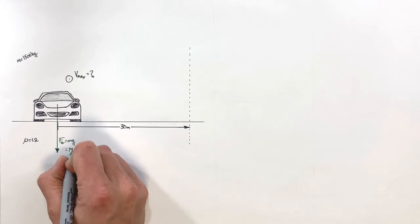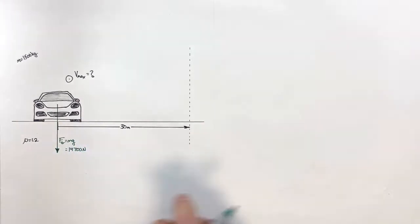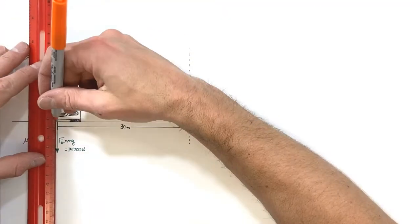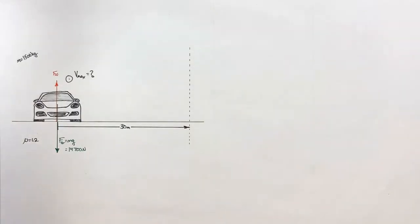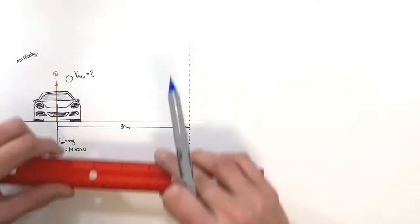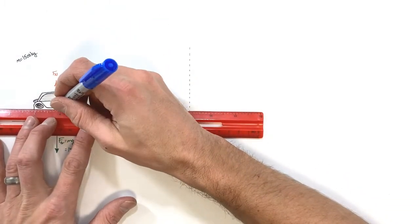This works out to be 14,700 newtons. Then of course there's the normal force holding the car up. Now lastly, and arguably most importantly, we're going to have friction acting on this car. And realize it's friction that is causing the car to go around this corner.